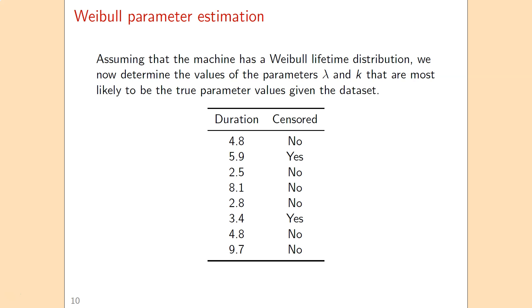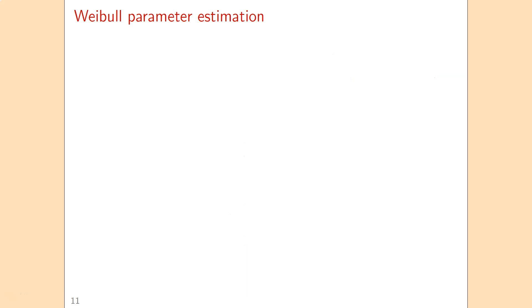The dataset we will use has eight durations. Two of them are censored, ending with preventive maintenance. The other six durations are event durations that end with a failure.